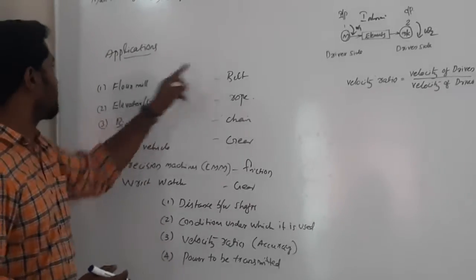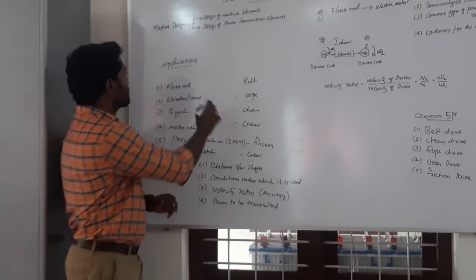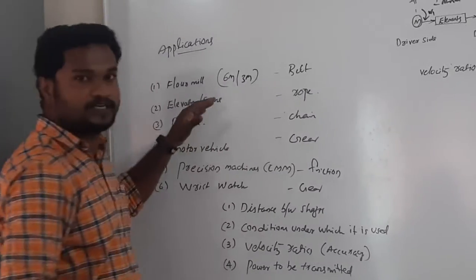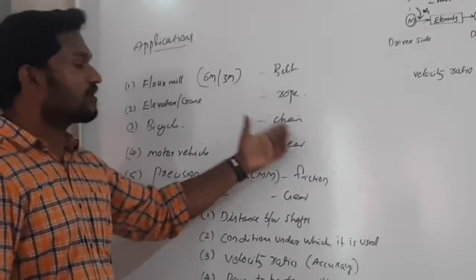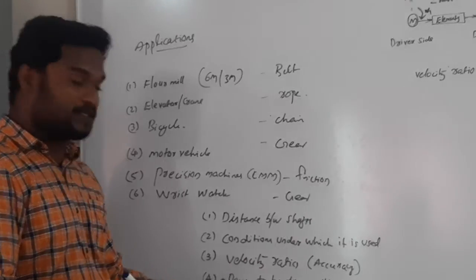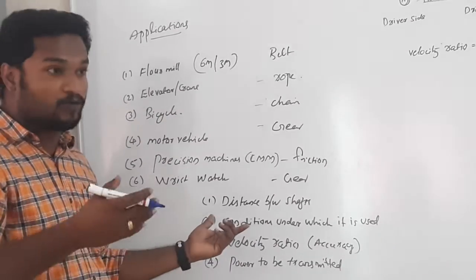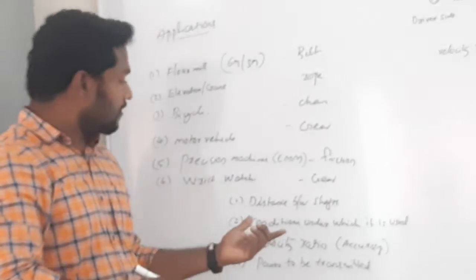Can we use a chain drive instead of a belt drive in a flour mill? The answer is no. There are certain criteria that define which transmission element should be used for an application. These criteria include: distance between the shafts — moderate distance suits belt drives; conditions under which it is used — for high temperature applications we cannot use belt drives and must go for chain drives; velocity ratio or accuracy requirement — for accuracy we go for gear drives; and power to be transmitted — for example, elevator applications require very high power to carry 10 or 15 people from floor to floor.